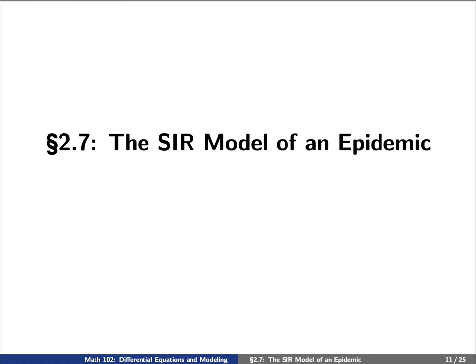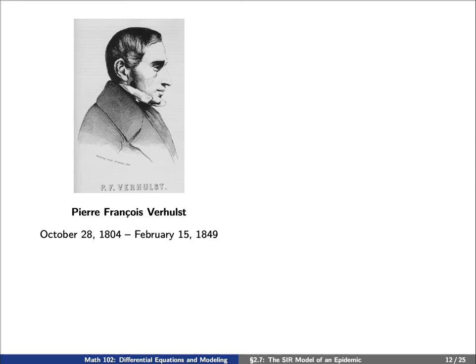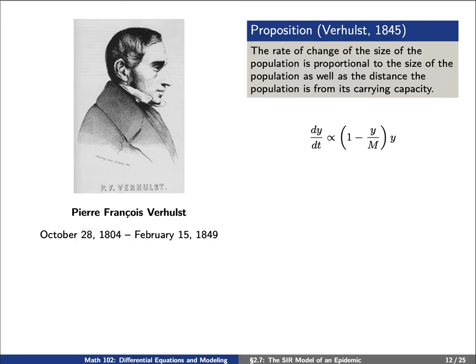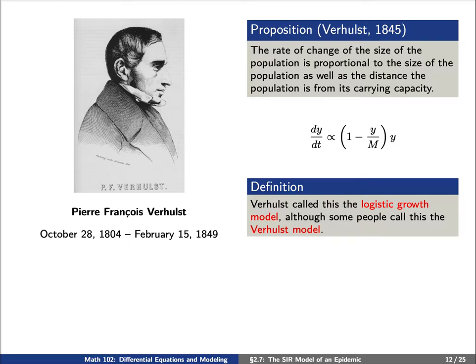Now, let's talk about the SIR model. This begins with the Belgian mathematician Pierre Verhulst, who was interested in the following statement: The rate of change of the size of a population is proportional to the size of the population, as well as its distance from the carrying capacity. Let's denote y(t) as the size of said population at time t. Then dy/dt is proportional to (1 - y/M) times y, where M is the carrying capacity. Verhulst called this the logistic growth model, although some people nowadays call this the Verhulst model.